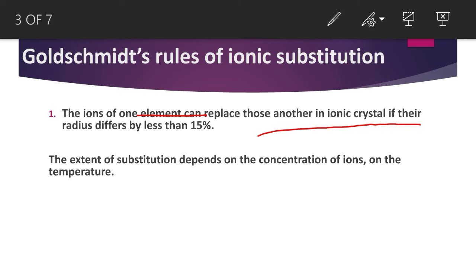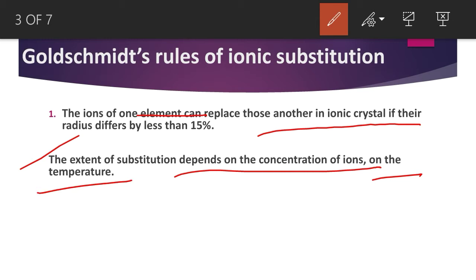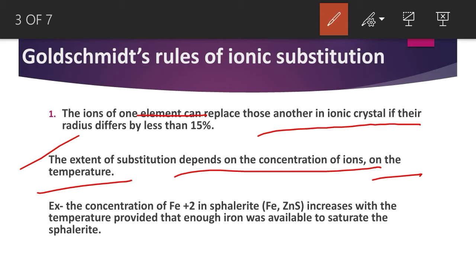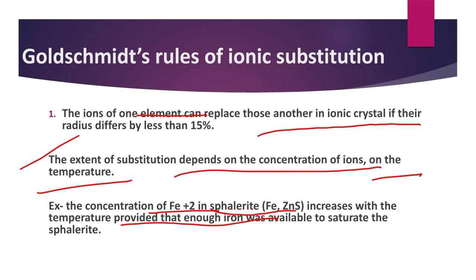The extent of substitution — how much substitution can take place — depends on the concentration of ions and on temperature. For example, the mineral sphalerite (ZnS): the concentration of iron (Fe²⁺) in sphalerite increases with temperature, provided that enough iron is available to saturate the sphalerite. If the temperature is higher, more substitution will occur. So we can apply Goldsmith's first rule to calculate the temperature at which a crystal formed based on the amount of substitution.